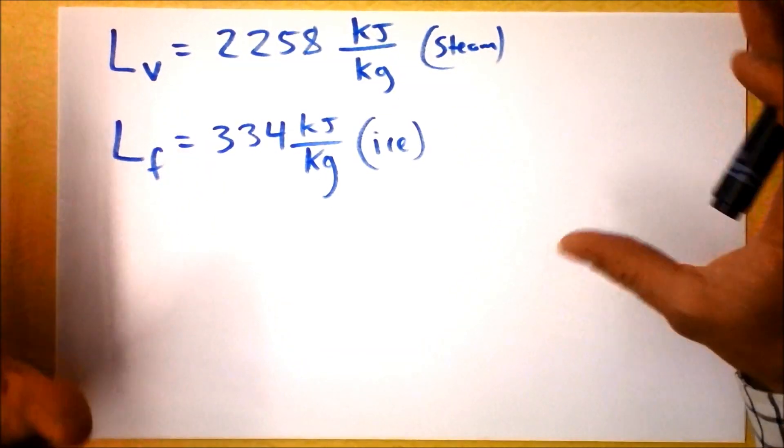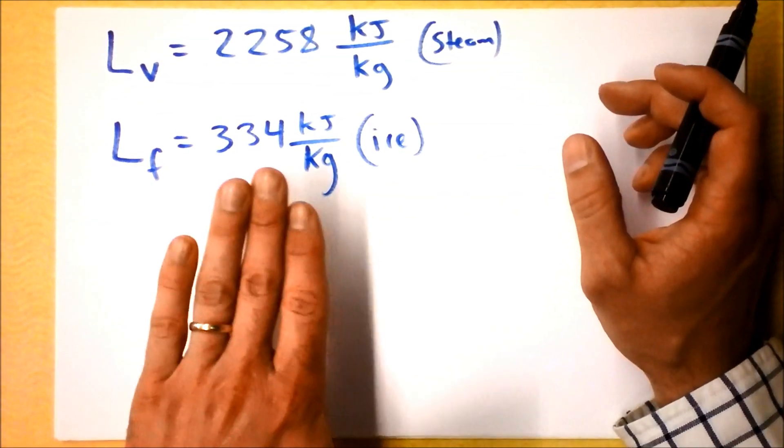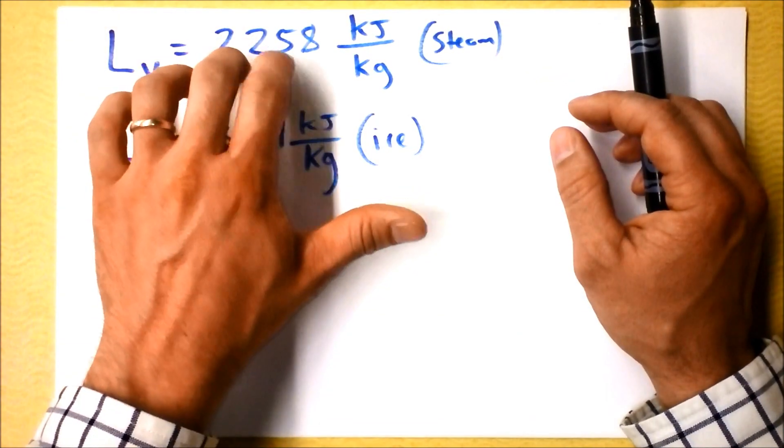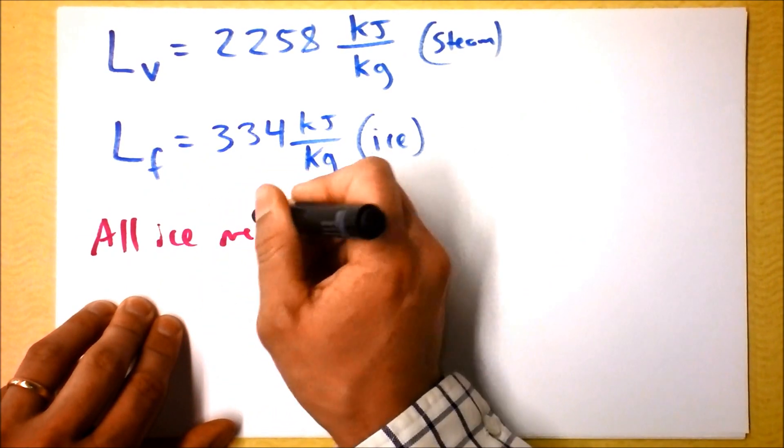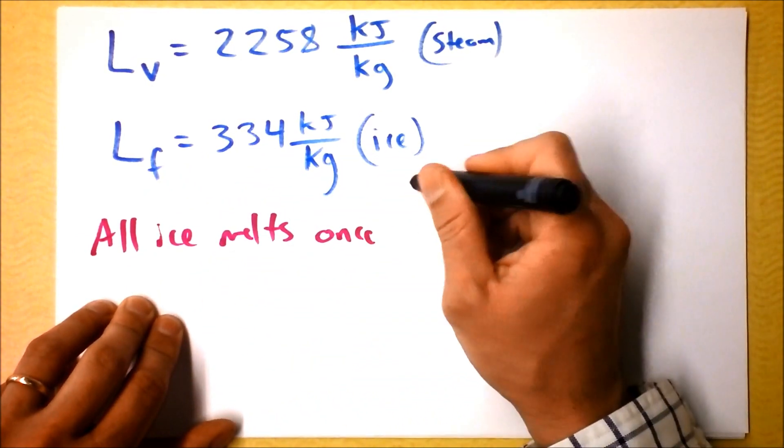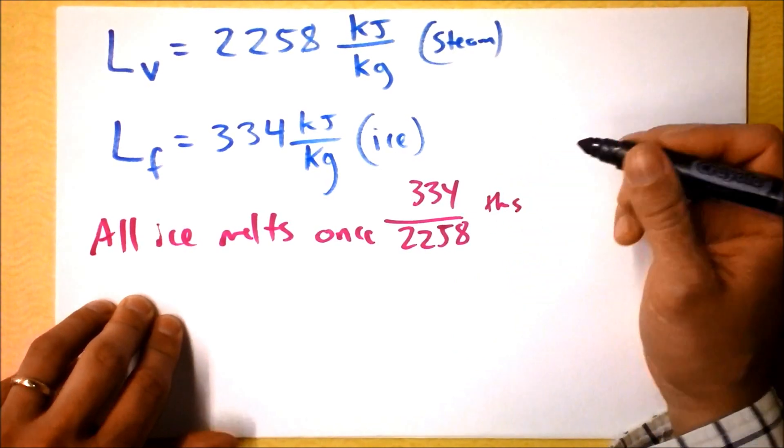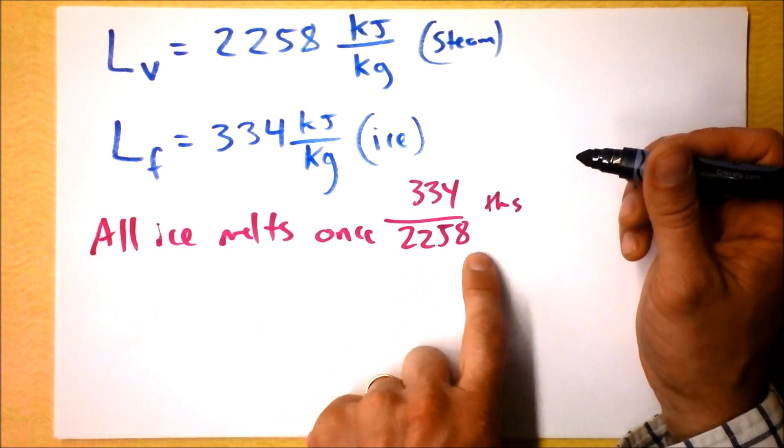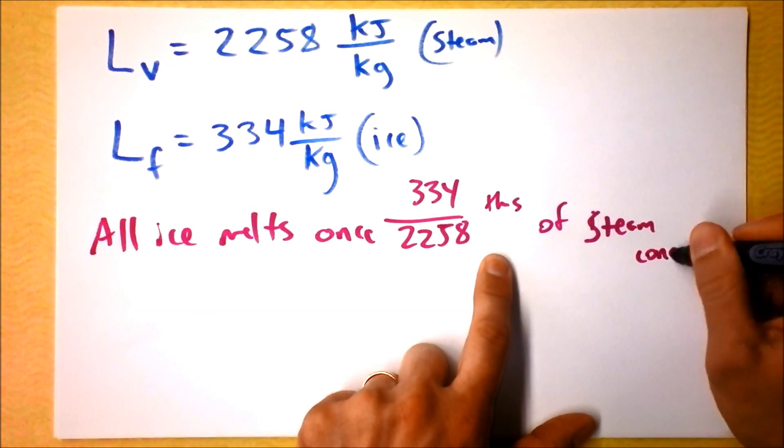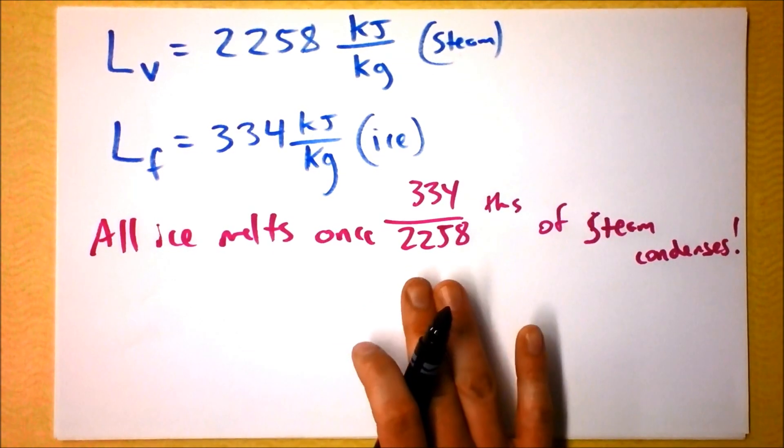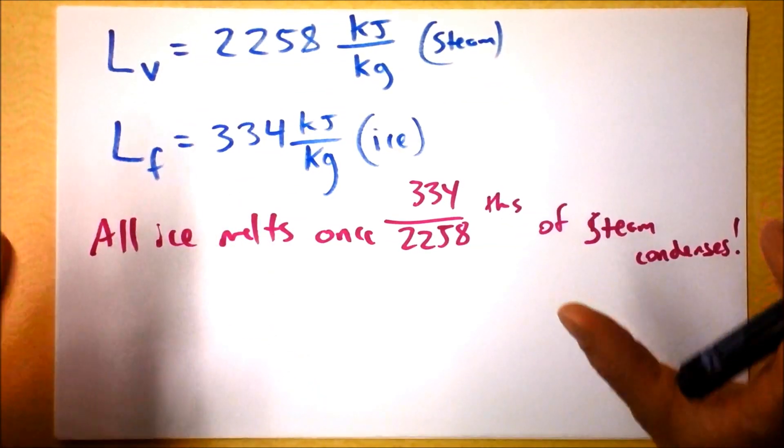So I'm just thinking, you know, the neat thing about these problems where you've got different phases is you kind of have to play a game. You kind of have to see, well, does this work? Does this work? My intuition tells me we might be able to melt all the ice and still have some steam left over. And here's what I'm able to do. Because of this ratio, I'm able to say all ice melts. Watch this. All ice melts once 334 divided by 2258. This is a ratio, and I'm going to say once 334/2258 of the steam condenses. That's pretty crazy. That's a very small fraction of the steam. It's less than 20%, more than 10% of the steam has condensed. But all of the ice has melted.